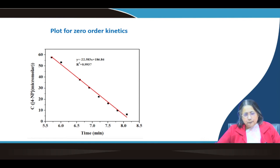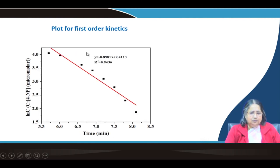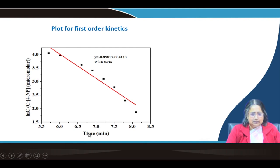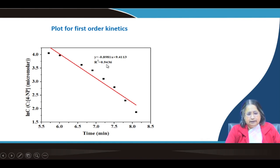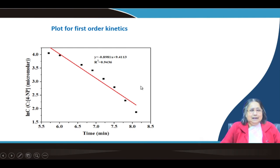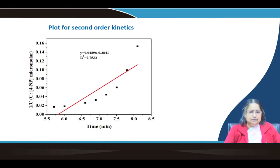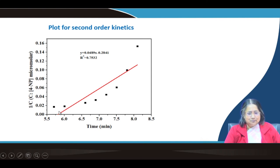Now let us check the other order plots with the same data. For first-order kinetics, we plot ln(C) versus time — but this curve is not linear; the correlation coefficient is 0.94, so it is not following linearity. That means the nitrophenolate reduction is not a first-order reaction. For second-order kinetics, we plot 1/C versus time — this is also not linear. So second order is also not followed.